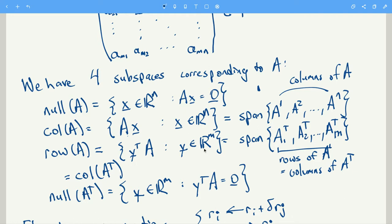And we just write each row, we take the transpose so that the result is kind of living in RM. And usually we write RM as column vectors. This is also the same as the column space of A transpose.